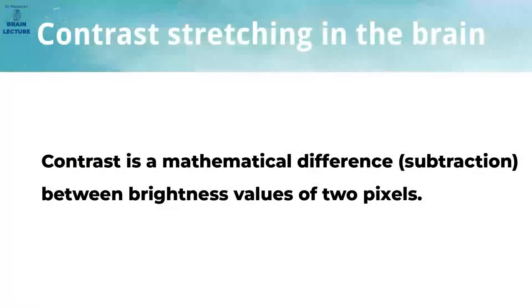In image processing and in sciences dealing with images in general, contrast is a mathematical difference of two pixel values. If you have two pixels of brightness levels B1 and B2, you calculate the contrast between those pixels by subtracting brightness levels B1 and B2. The absolute value from this subtraction is then called contrast. The bigger the difference of these two brightness values, the more contrast exists between them.